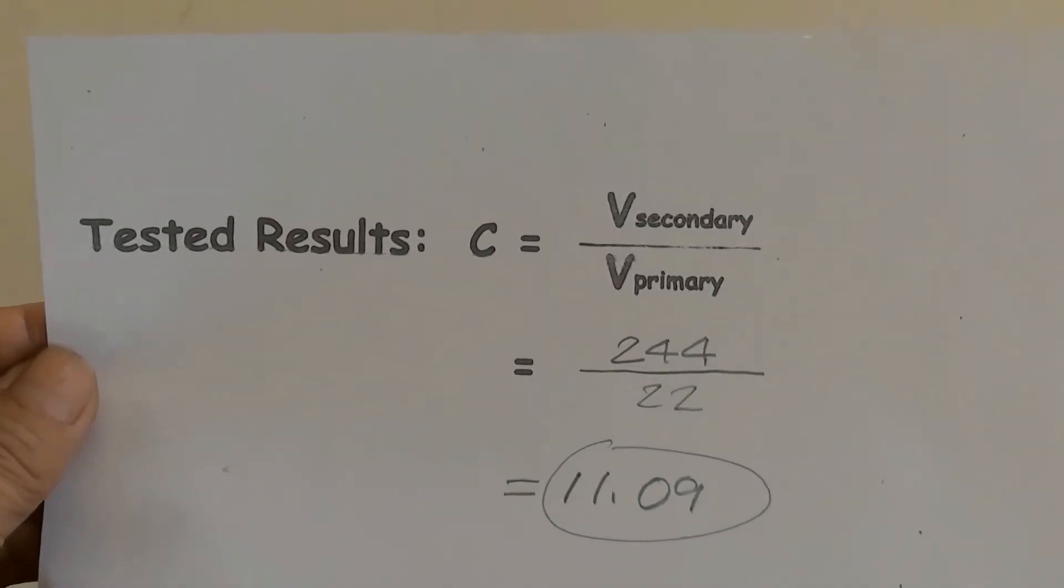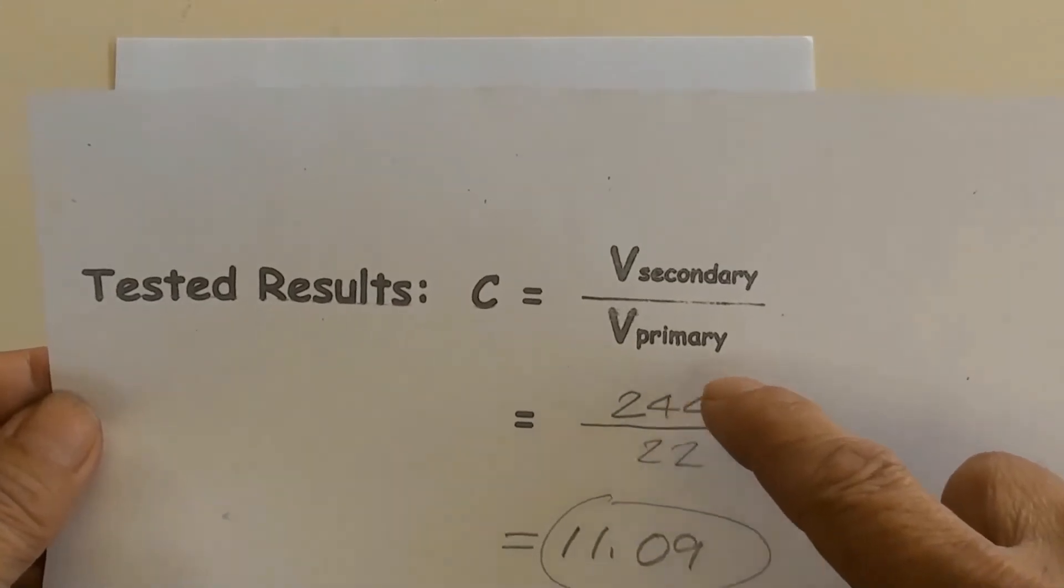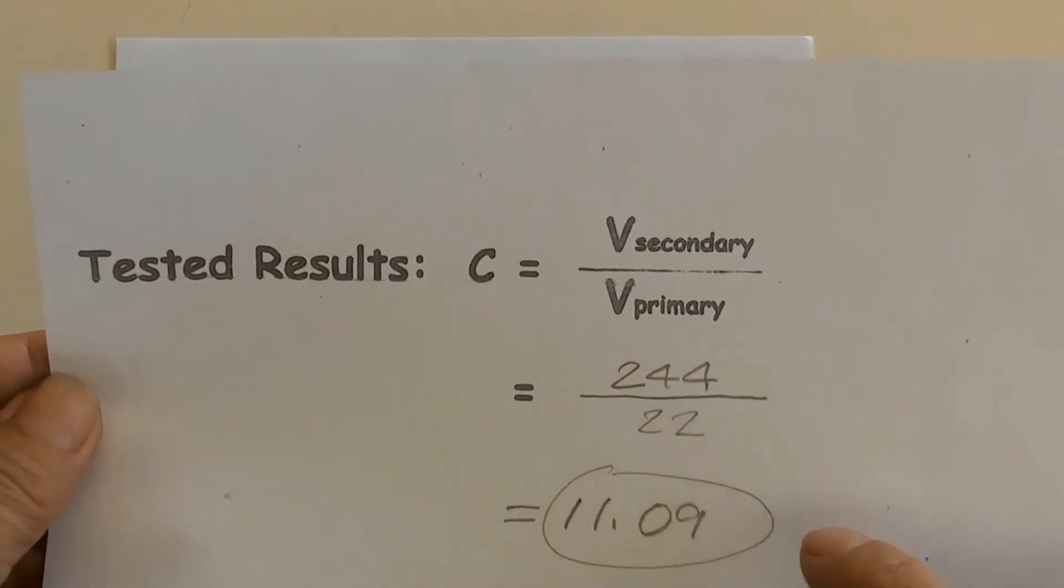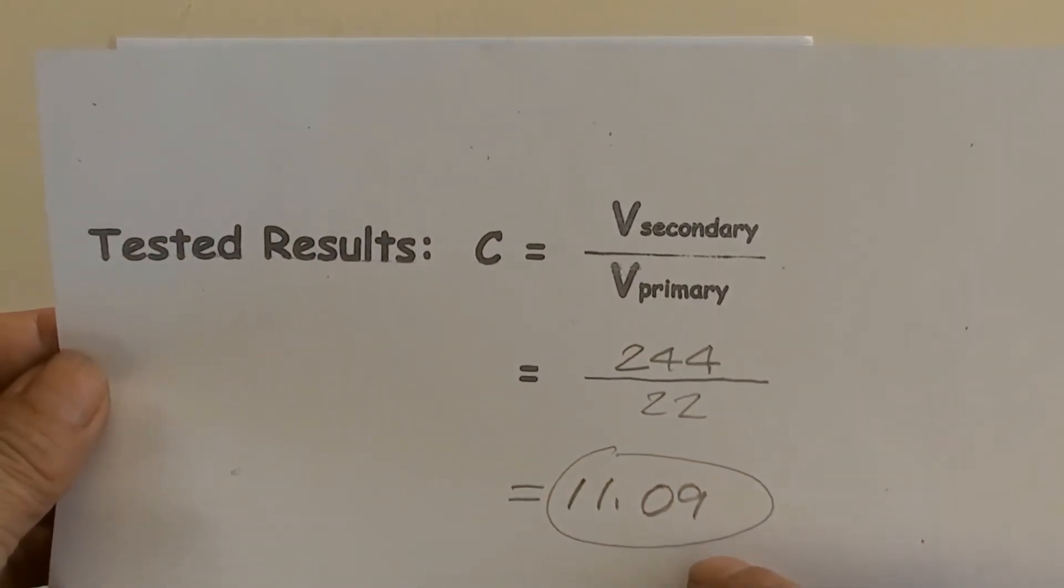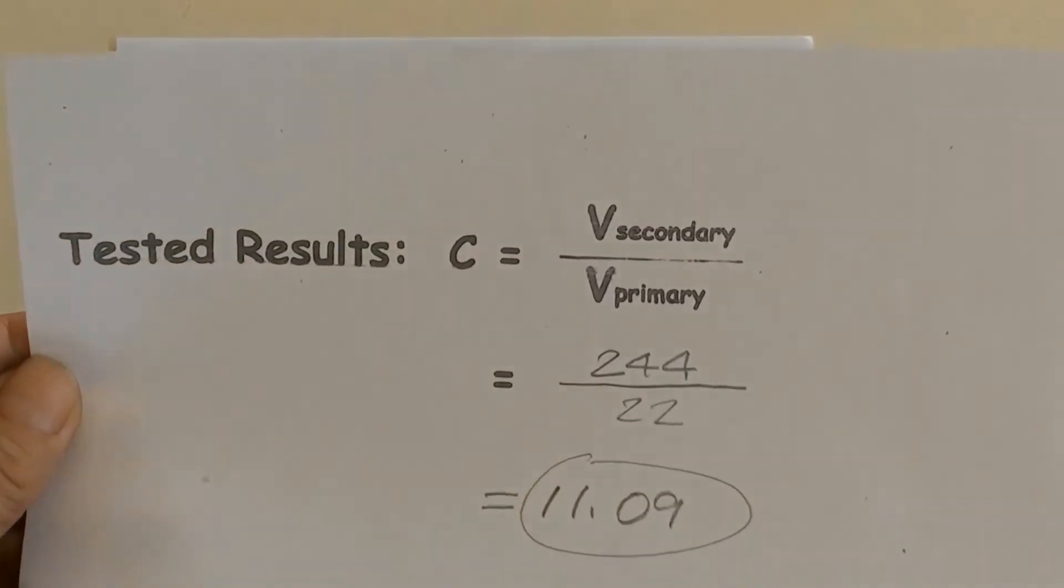Tested results are filled in this formula. V secondary over V primary equals 244 volts over 22 volts equals 11.09, so C is 11.09.